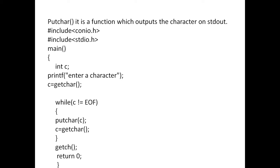Hash include conio.h, hash include stdio.h, main function, int c. Printf to prompt, enter a character — c is equal to getchar. While c is not equal to end of file: putchar c, c is equal to getchar. Close the bracket, curly braces, getch, return 0. Here c is an integer type. Printf enter a character, c is equal to getchar — whatever the input data it will store into c, that is the ASCII code of the input data.